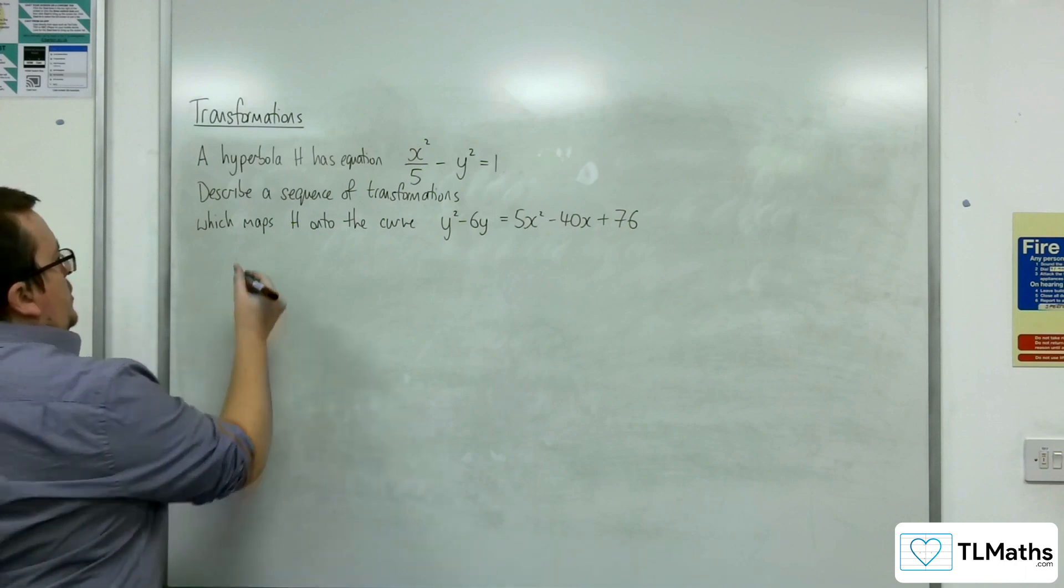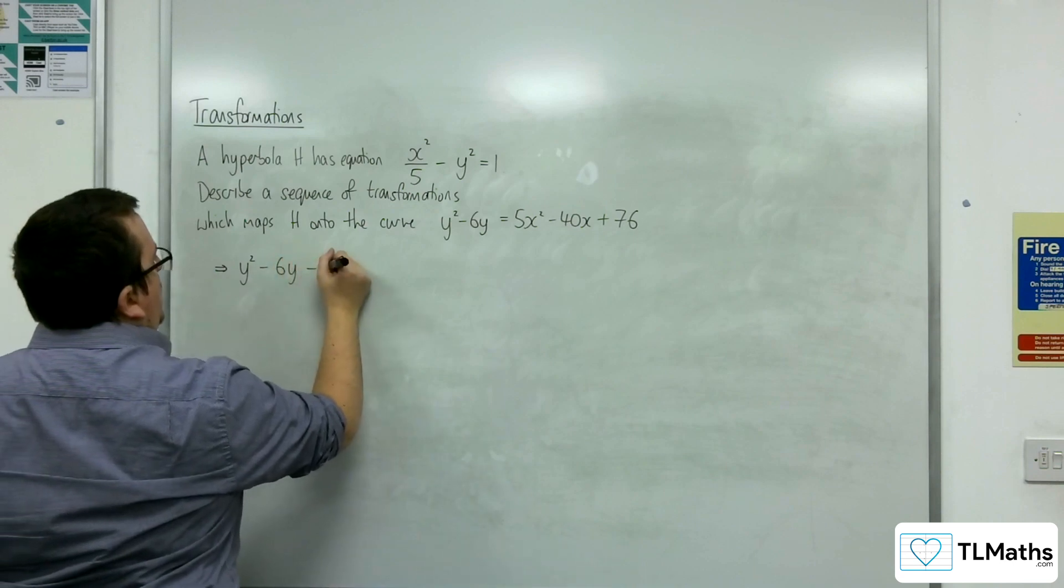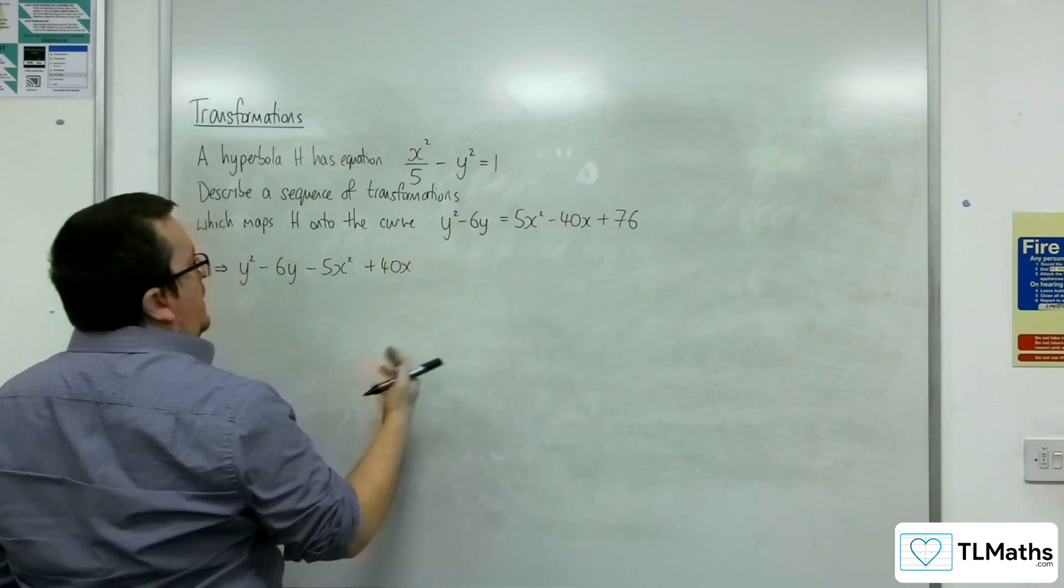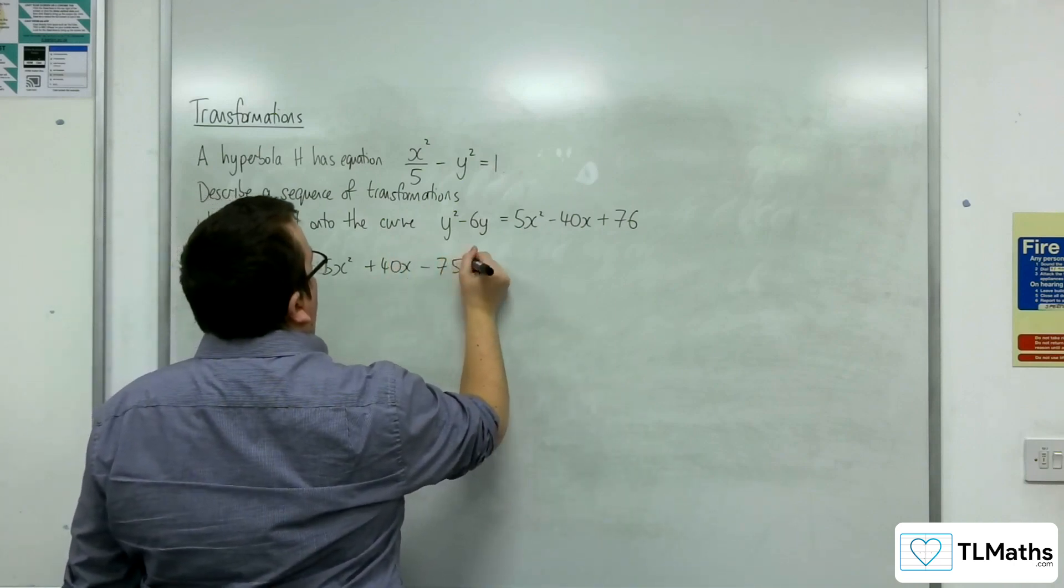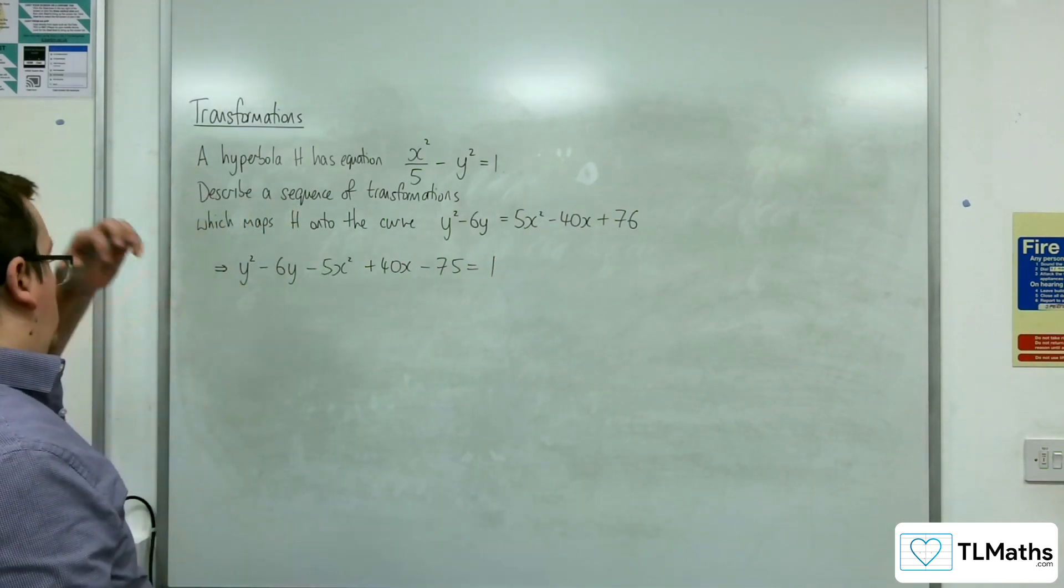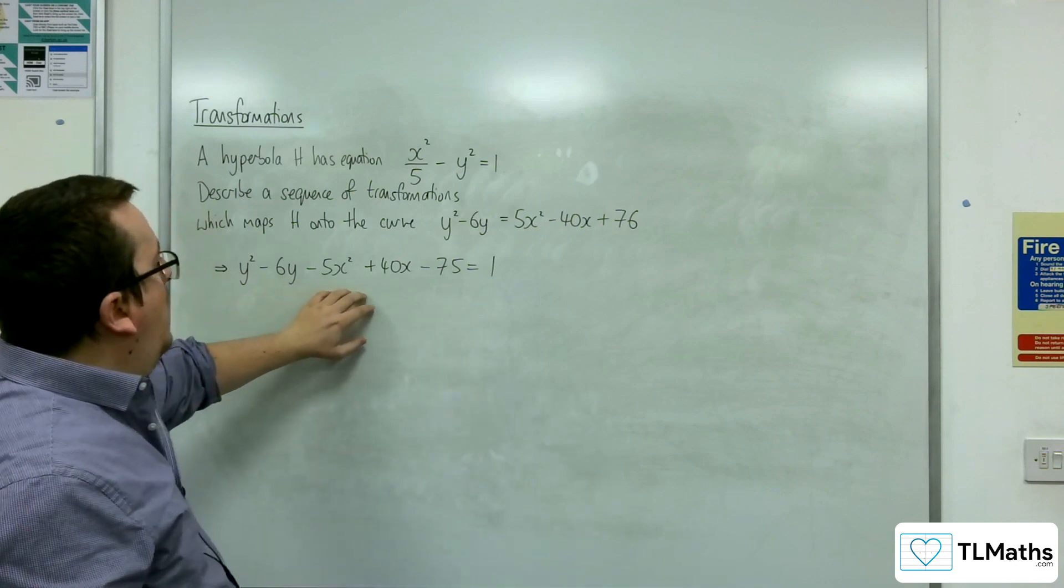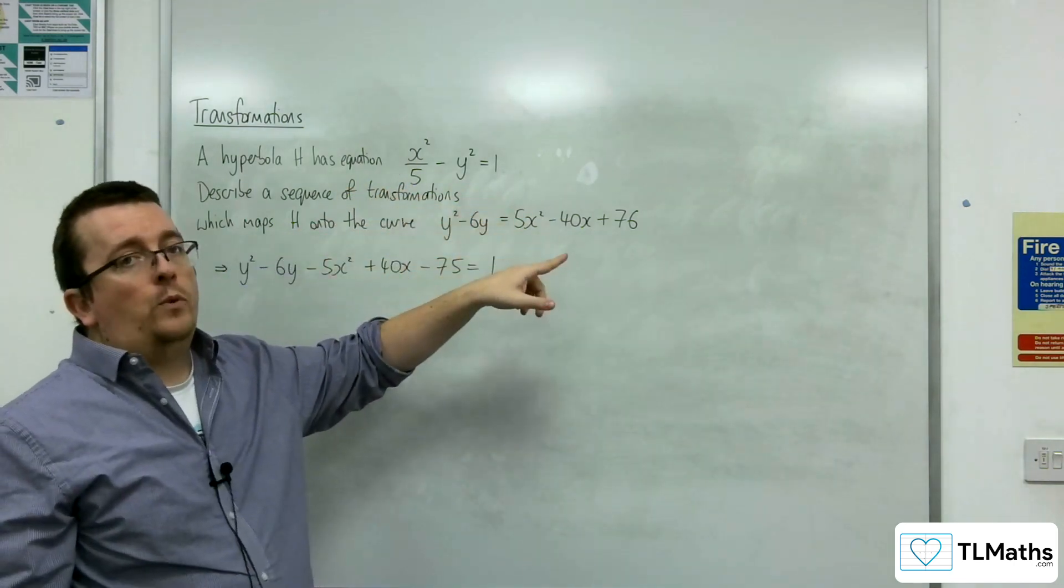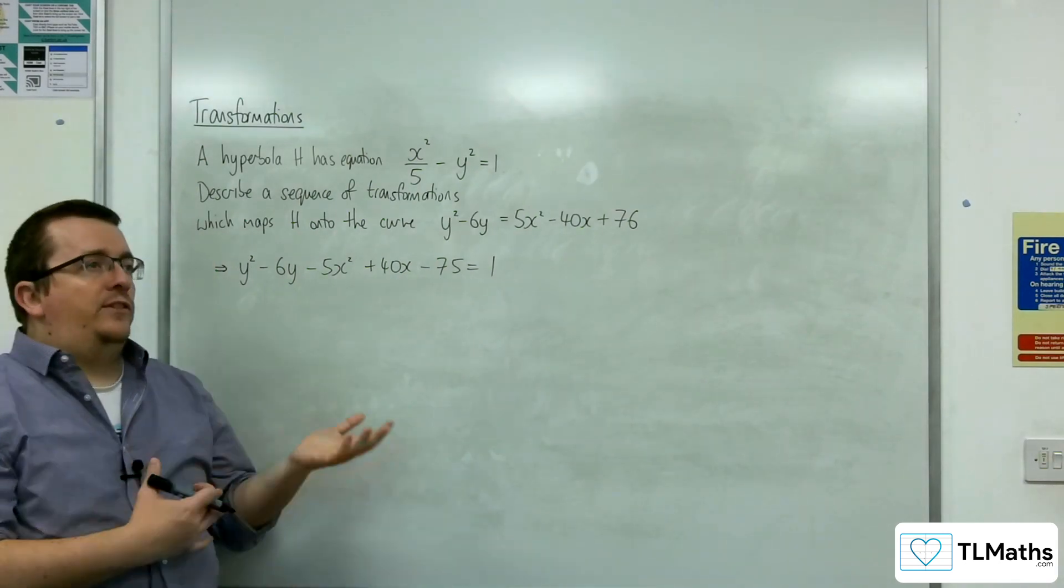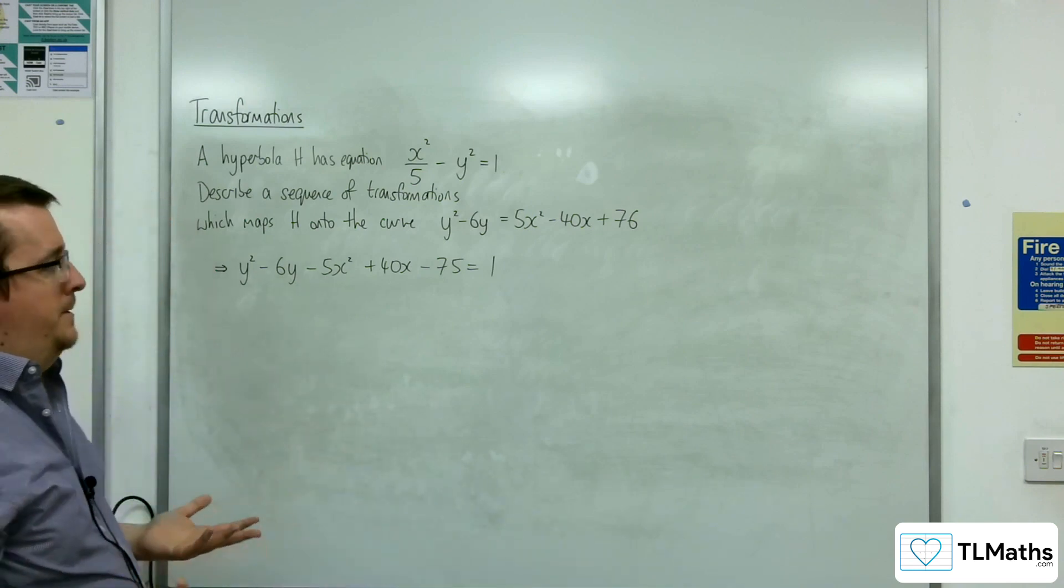So the first thing I would do is I would rearrange this to get y squared take away 6y, take away the 5x squared plus 40x and then take 75 from both sides to get it equal to 1. Now, what we might be noticing at this point is we've got the y squareds take away x squareds here and x squareds take away y squareds there. So that would inform me that the x's and y's have probably been swapped and so a reflection in the line y equals x has probably occurred.